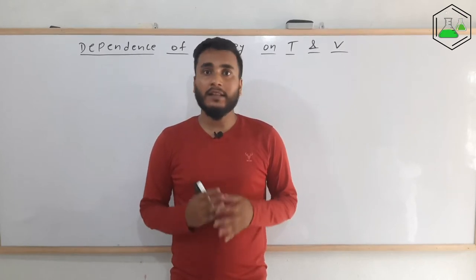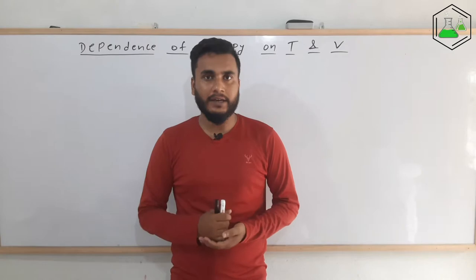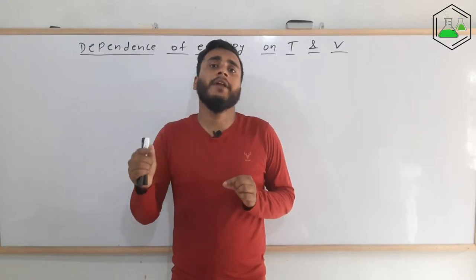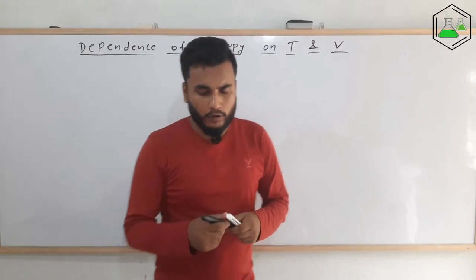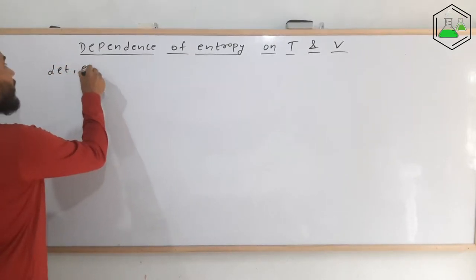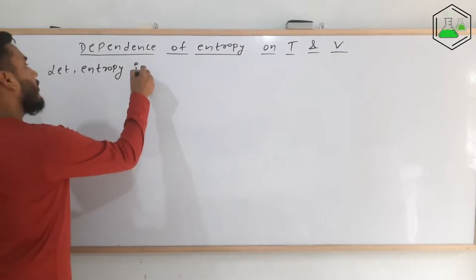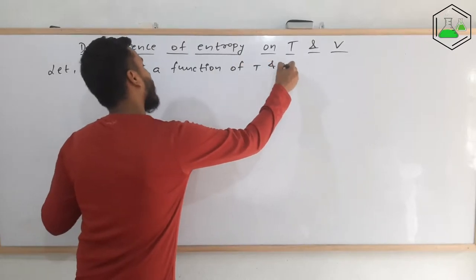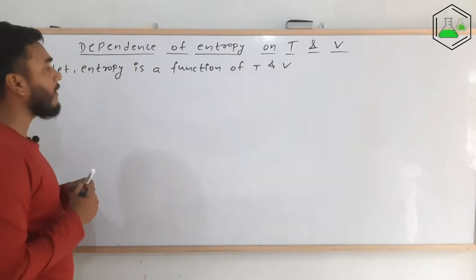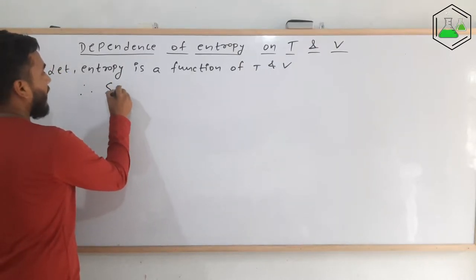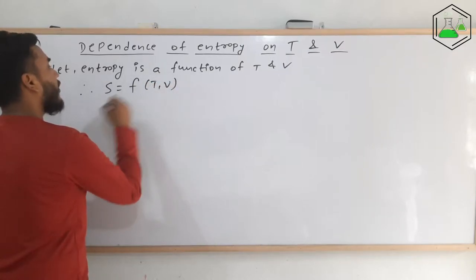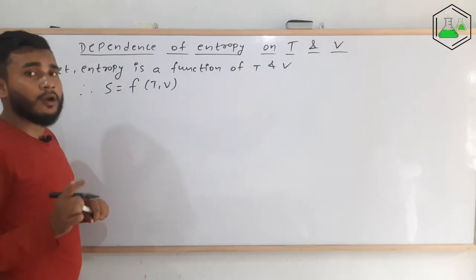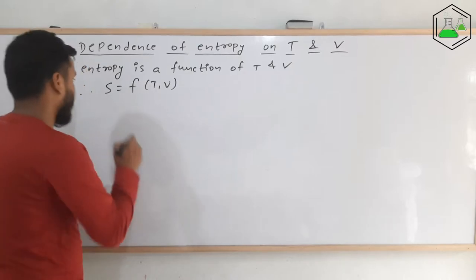We know that entropy is a state function — it depends only on the initial and final state. Entropy is a function of temperature and volume, meaning that with changes in temperature and volume there is a change in entropy. So we write that entropy S is a function of temperature and volume: S = f(T, V). Since this is a function, we can apply Euler's theorem of exactness.